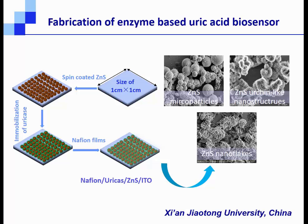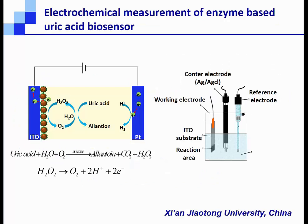This is the SEM result of the final working electrode with Nafion, uricase, and zinc sulfide. This is the electrochemical measurement principle and the three-electrode setup for detection of uric acid in PBS solution. Electrons are produced by the enzymatic reaction, and uric acid acts as a catalyst, so we can detect the current produced by the electrochemical system to measure the concentration of uric acid.